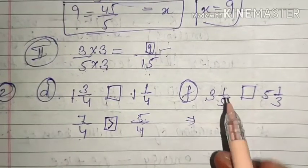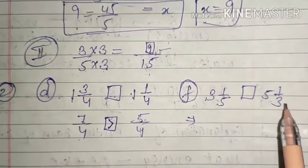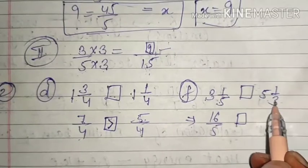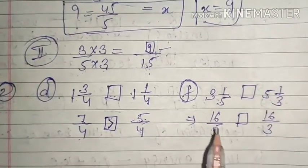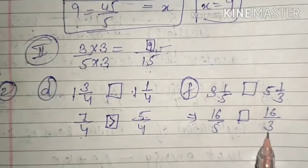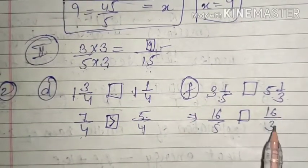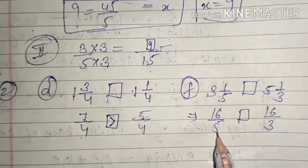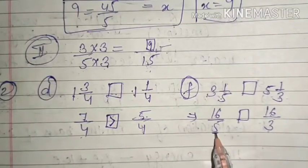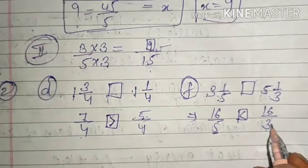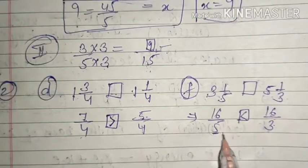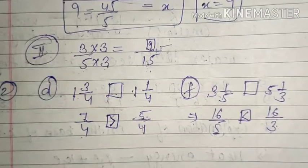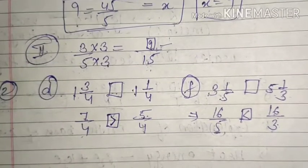Now part F: 3 and 1 by 5 versus 5 and 1 by 3. First convert to improper fractions: 3 into 5 is 15, plus 1 is 16, giving 16 upon 5. And 5 into 3 is 15, plus 1 is 16, giving 16 upon 3. Here the numerators are same and denominators are different. When numerators are same, the fraction with the greater denominator is the smaller fraction. So 16 upon 5 is greater than 16 upon 3. This comes from the chocolate example concept we studied earlier.